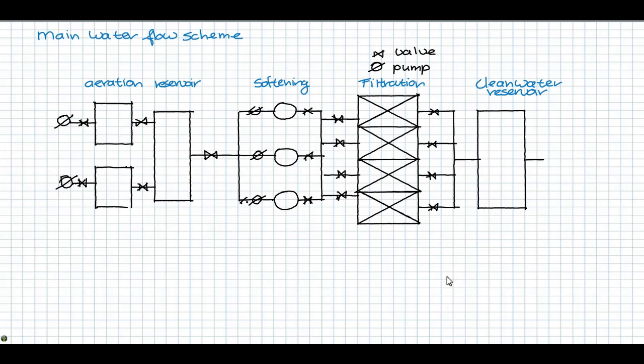Here we don't do this. Try to figure out from the scheme presented here if all operations can be done with the number of valves and pipes indicated. For example, is it possible to isolate a filter for backwashing without hampering the production of drinking water?